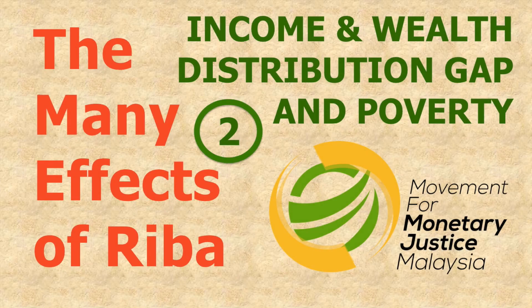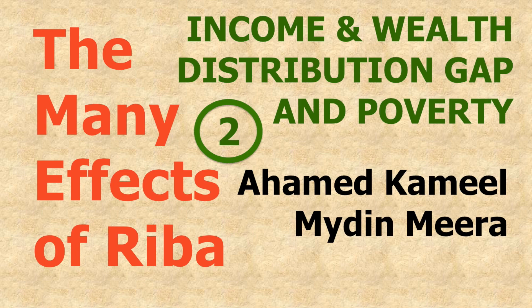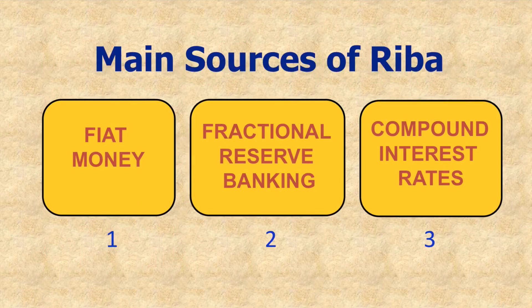The many effects of Riba on income and wealth distribution gap and the creation of poverty. In video 1, you highlighted the main sources of Riba in the present monetary system, namely fiat money, fractional reserve